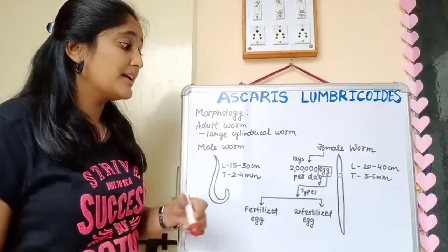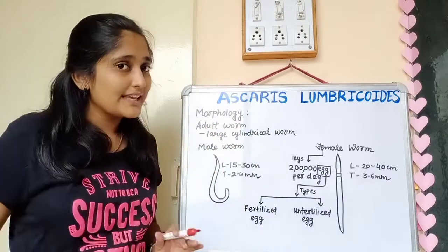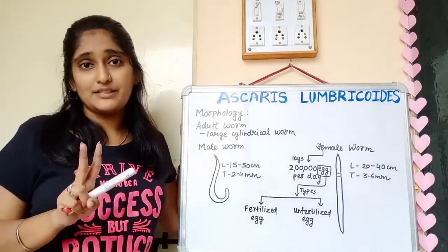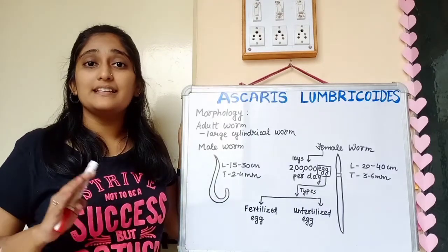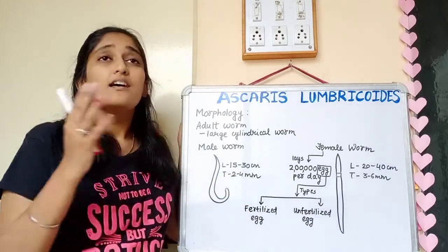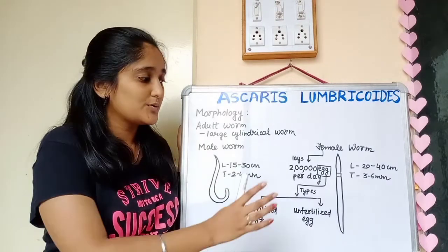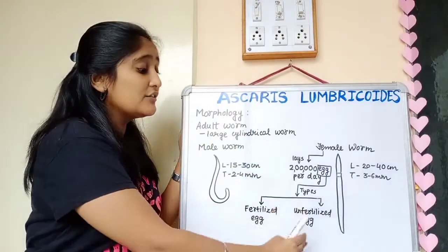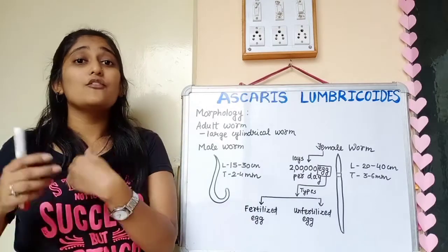The female worm lays 2 lakh (200,000) eggs per day. The eggs are of two types: fertilized and unfertilized. Fertilized eggs are produced after mating, and it is the fertilized egg that can cause infection.